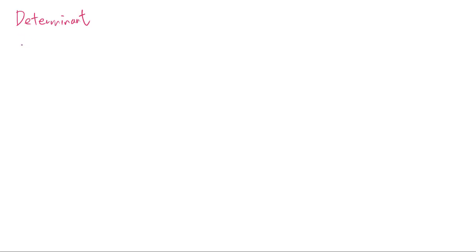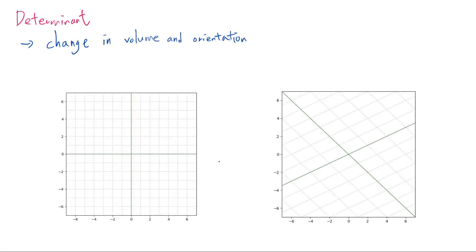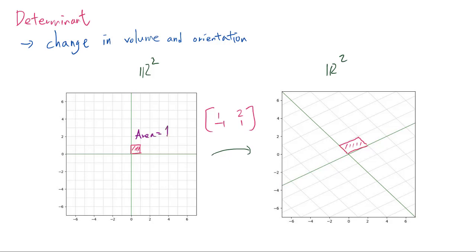In particular, the determinant is really going to represent the change in volume and orientation of the space. Let us suppose we have a linear transformation from R2 to R2 given by the matrix [[1,-1],[2,1]]. This particular unit square is being mapped to a parallelogram in R2. The square has area 1, and this parallelogram is going to have some area A. The area is exactly going to be multiplied by the determinant of the matrix in question. The determinant of this matrix is exactly 3, so the area of this parallelogram is in fact 3.